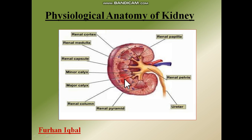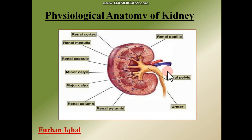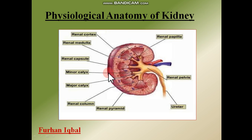There are almost 8 to 10 renal pyramids in a kidney. This is the renal capsule, which is the hard covering of the kidney. This depression is known as the hilum. This is the ureter — the tube which moves toward the urinary bladder. The ureter is divided into portions known as the major calyces, and these are divided further into smaller ones known as the minor calyces.